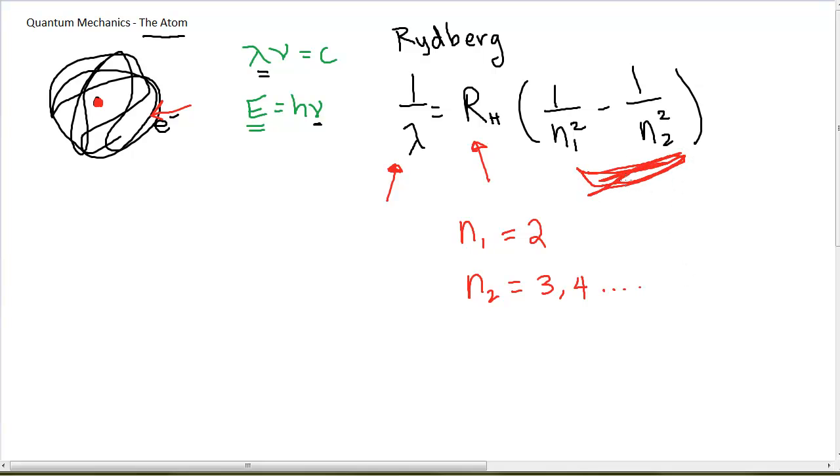Now we have to figure out why. What is going on in a hydrogen atom that would cause the wavelengths, which have a frequency associated with them and have an energy associated with them, what's going on in the atom that would give us this equation? Why would this equation fit for the atom?